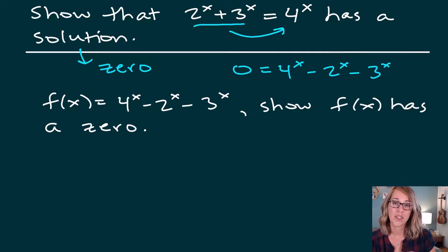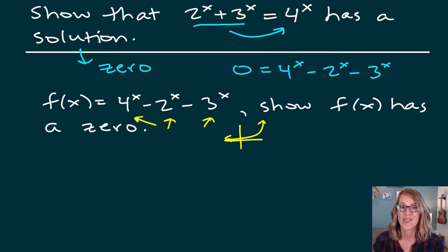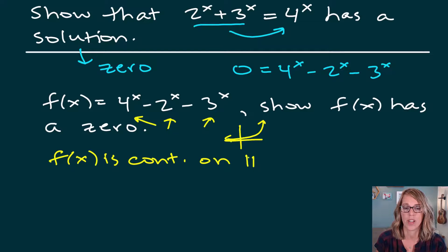The first thing we need to do for the intermediate value theorem to even work for us here is to verify continuity. I have a combination of three exponential functions. Exponential functions are continuous everywhere. So we can go ahead and say that f of x is continuous everywhere, on all real numbers, because it's a combination of exponential functions. So I've got that satisfied.